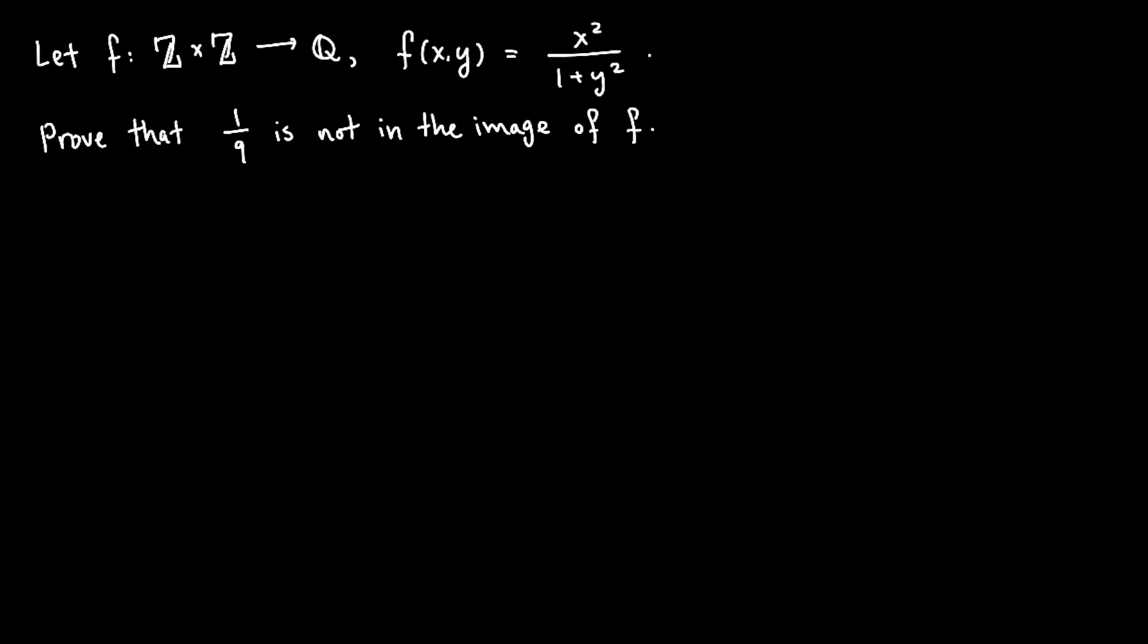Here's a problem for you. Let f be the function from Z cross Z to Q, defined like this: f of x, y equals x squared over 1 plus y squared. Prove that 1 over 9 is not in the image of f.